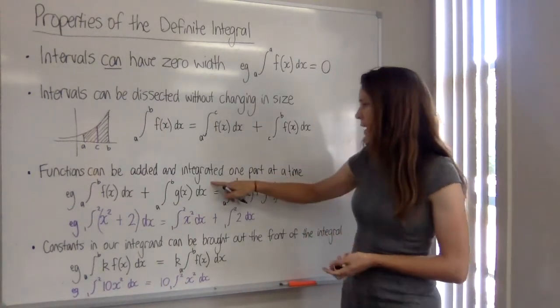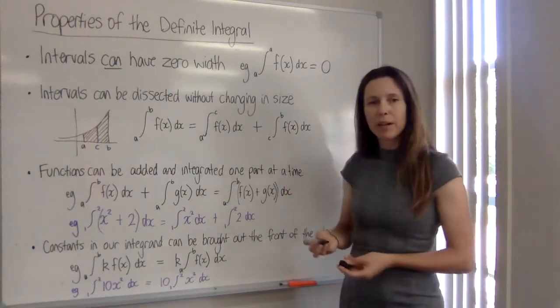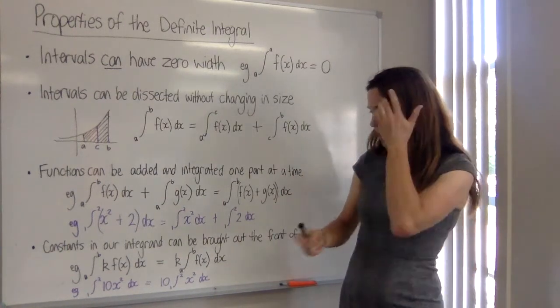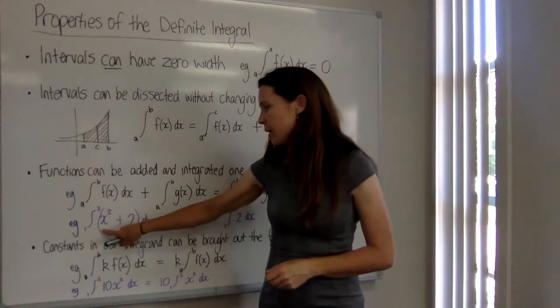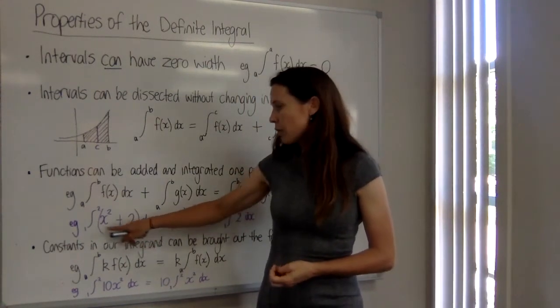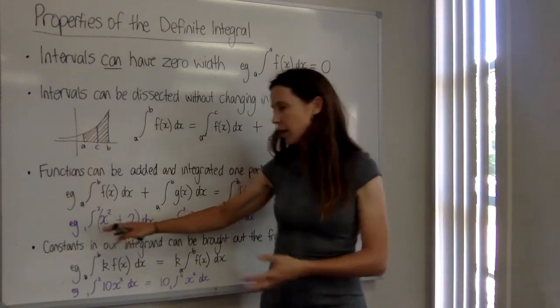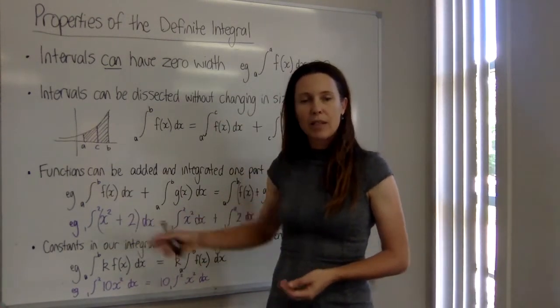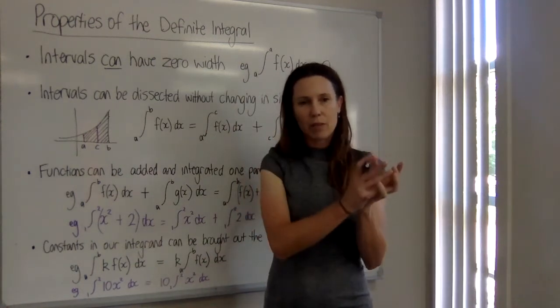Now, functions can also be added and integrated one part at a time, and we've already seen this with our practice. When you're integrating something like, for example, x squared plus 2, we're finding the primitive of this term and doing our thing with it, and then we're finding the primitive of the other part. So we know that if we find the primitive of each of them separately...